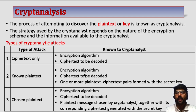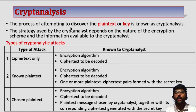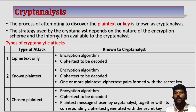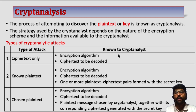The process of attempting to discover the plaintext or key is known as cryptanalysis. The hacker or the opponent tries to recover some plaintext or key whenever he gets some ciphertext or some other information — this is called cryptanalysis. The strategy used by the cryptanalyst depends on the nature of the encryption scheme and the information available to the cryptanalyst.